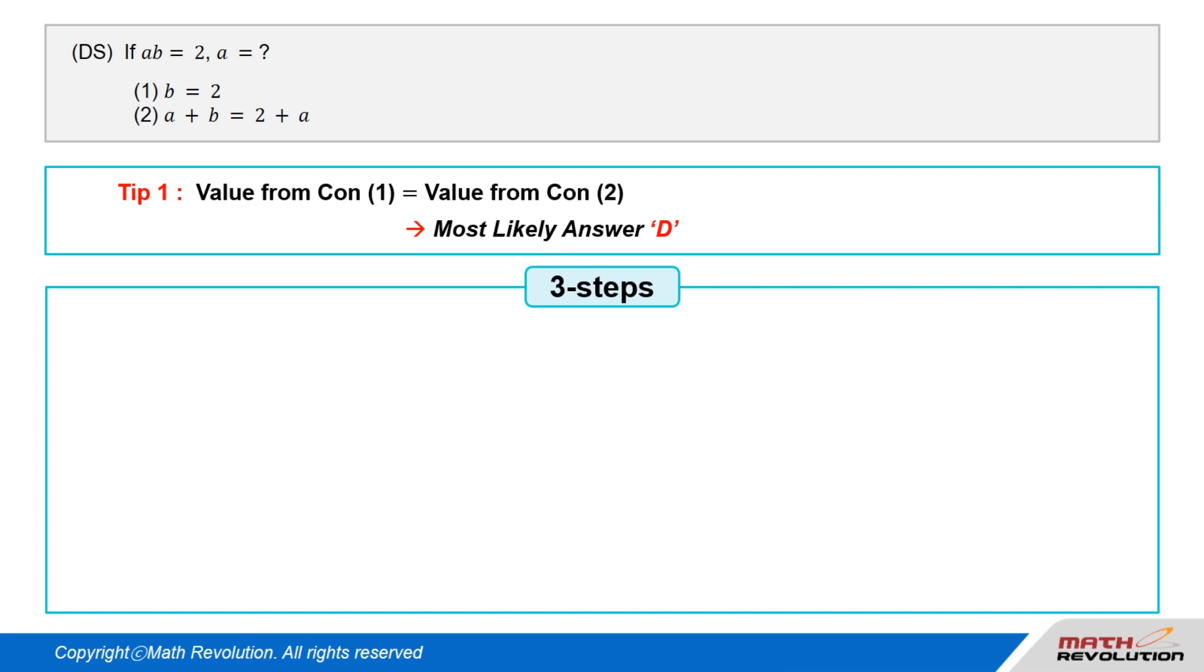Let's apply the 3 steps suggested previously. Follow the first step of the variable approach by modifying and rechecking the original condition and the question. We have to find the value of A if A times B equals 2.